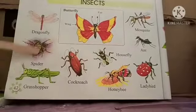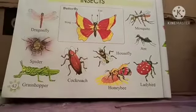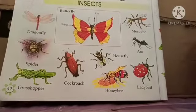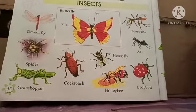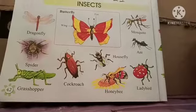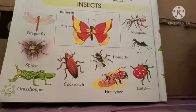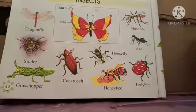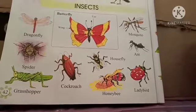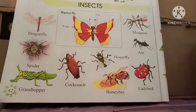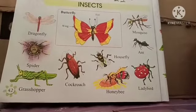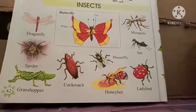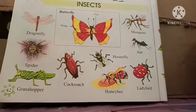These are few insects we can find very commonly around us. The most commonly found are spiders, cockroach, housefly, mosquito, butterfly, dragonflies, grasshoppers, honeybees, and ants. You now know about insects. Bye children.